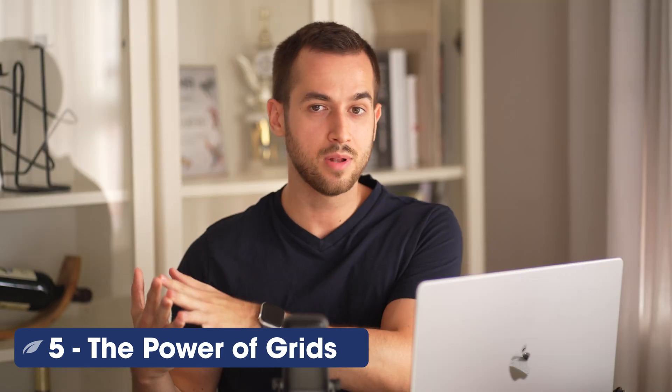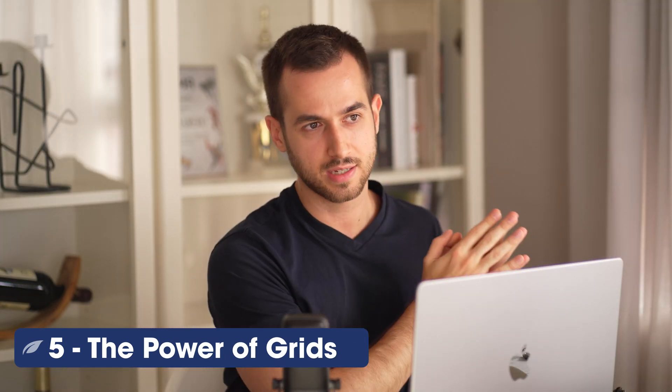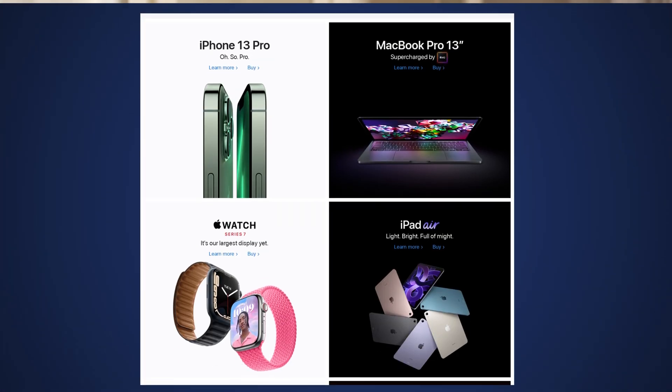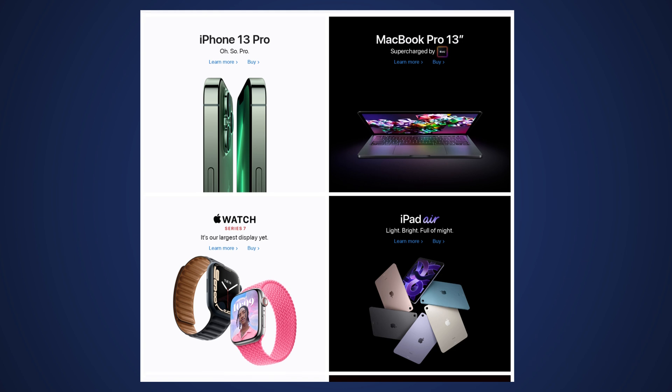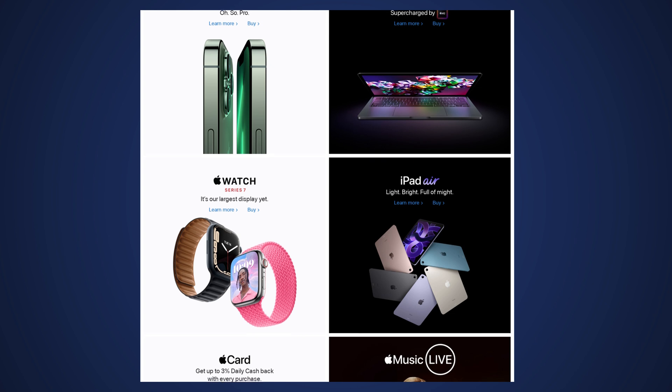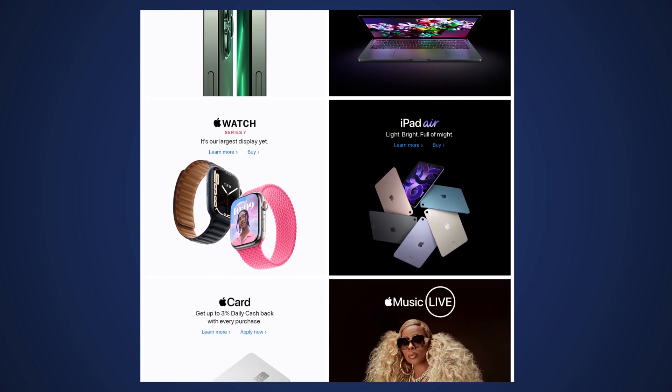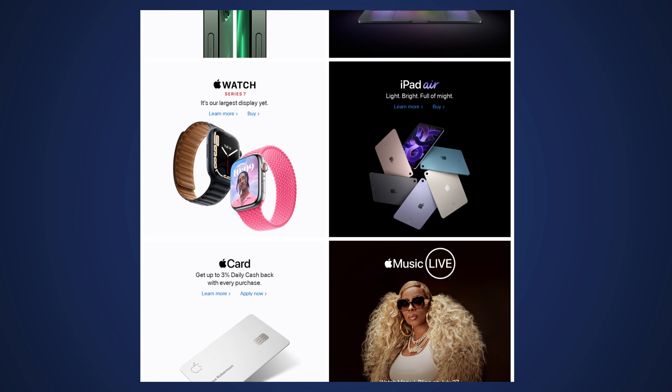Key principle number five: the power of grids. Apple has developed a great habit of using columns to showcase different topics. I can't emphasize enough how important it is to invest in good product shots — it doesn't matter if you're selling computers, coffee, clothes, or services. Good photo shoots sell, and you can clearly see this on Apple's website. Apple's website is actually not difficult to build; it's quite easy to replicate using Thrive Architect.